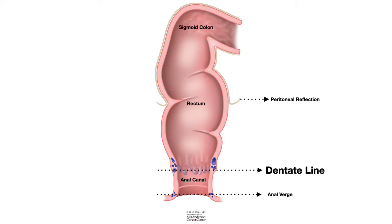The anal canal is lined by squamous epithelium and has a very rich vascular and neural supply. In contrast, the rectum, like the colon, is lined by columnar mucosa, and unlike the anal canal, the rectum doesn't have the same pain sensation when it gets irritated.